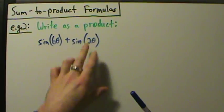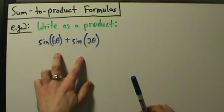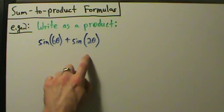Here's example two of using the sum to product formulas. What we're going to do is write this sum of two trig functions as a product. So here we have sine of six theta plus sine of two theta.